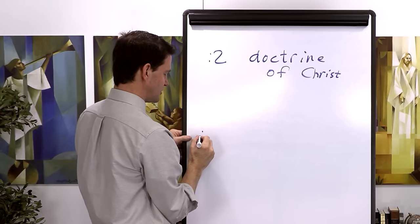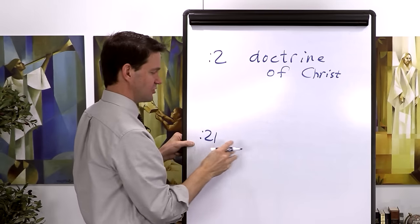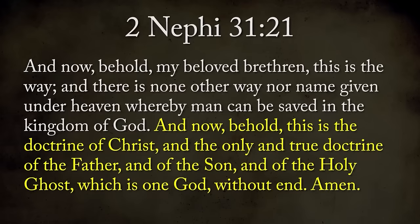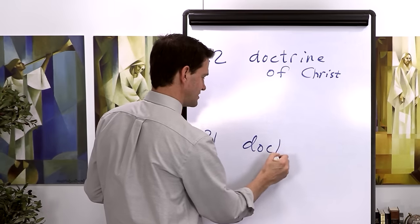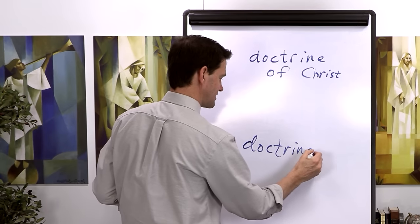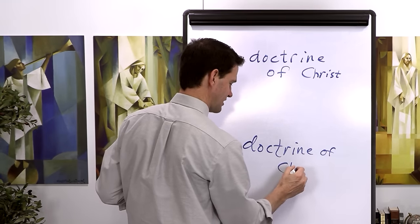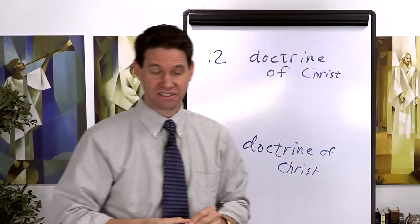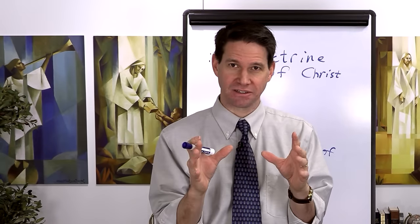If you pop down to verse 21, about five lines from the bottom, he says, 'Behold, this is the doctrine of Christ, and the only and true doctrine of the Father, and of the Son, and of the Holy Ghost, which is one God. Amen.' Connecting these two statements creates a neat bookend technique that ancient writers used when giving definitions or clarifying something.